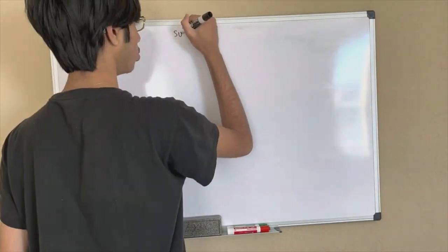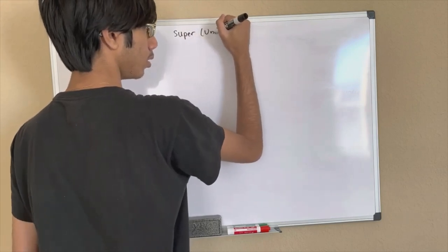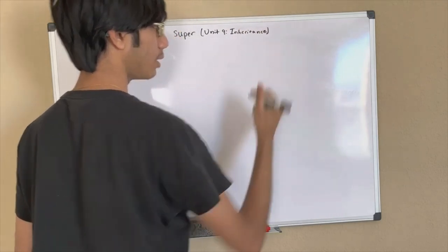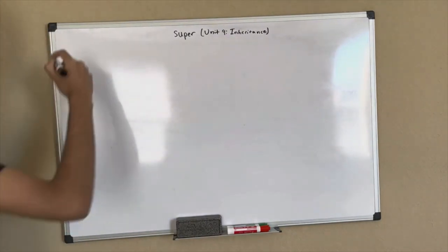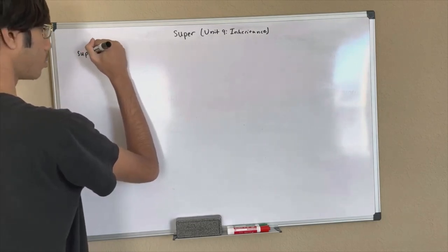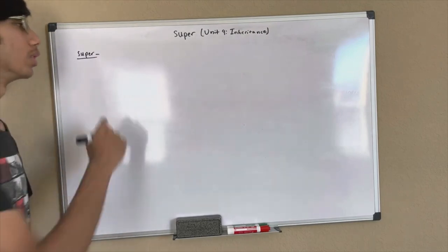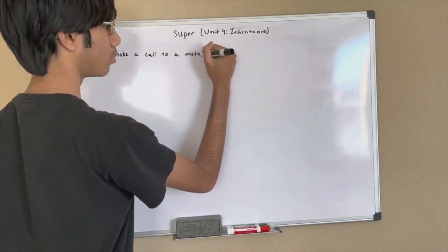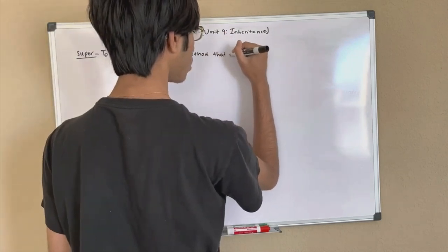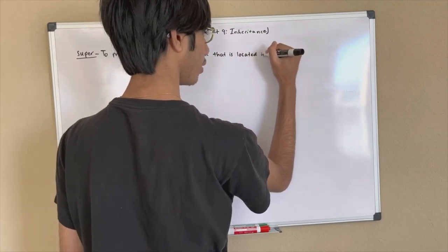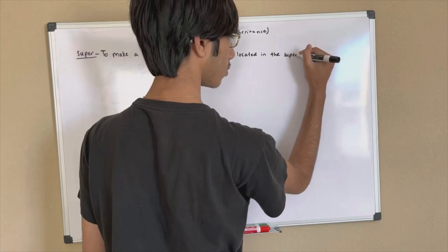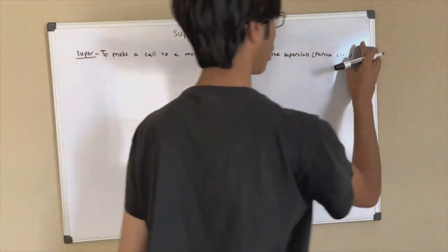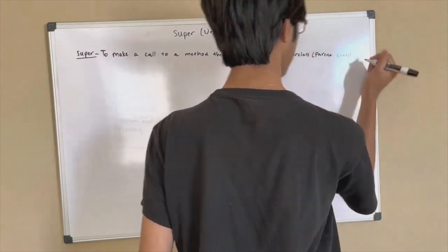This is the super keyword. It is present in the AP curriculum in Unit 9 Inheritance. Since it's in the curriculum, it is expected that those of you taking AP should know it, since it's going to appear on the exam. The main use of the super keyword is to make a call to a method that is located in the super class, also known as the parent class. That is the most recognizable way of using the super keyword.